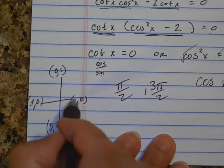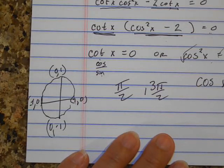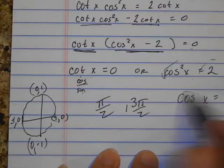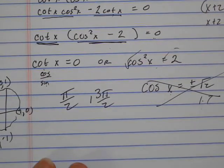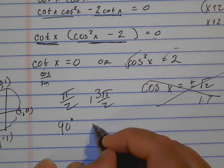So there is nothing you could put in for x that would make cosine 1.7 because the radius is just 1. So there actually isn't an answer at that place. Our answers are only pi over 2 and 3 pi over 2, which are 90 degrees and 270 degrees.